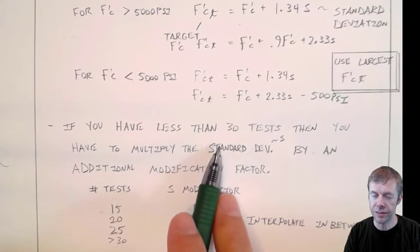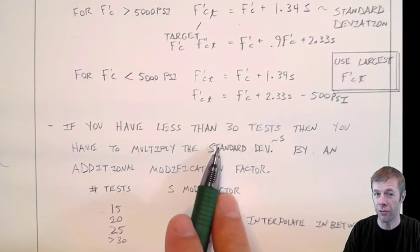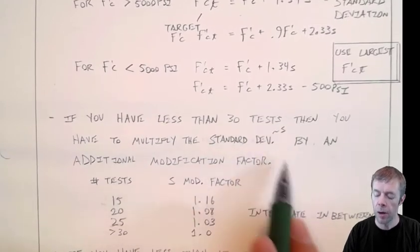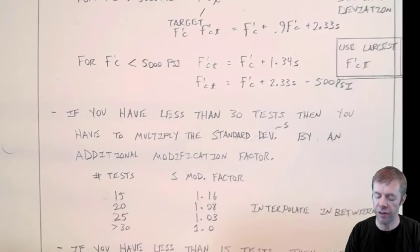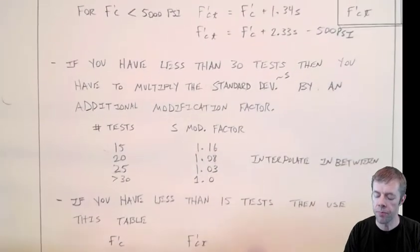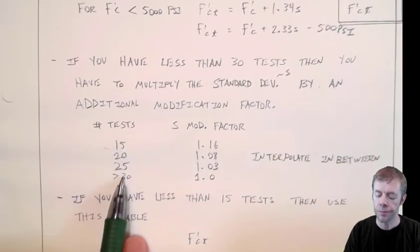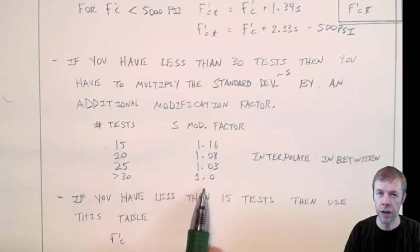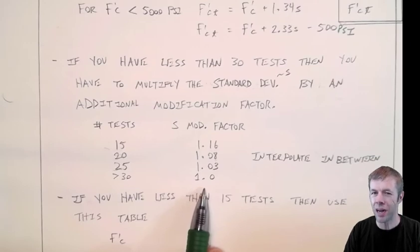If you have less than 30 tests, a lot of people don't have 30 tests so they fall into this category, then you have to multiply the standard deviation by an additional modification factor. This is a table. This is the number of tests you have, and this is the modification factor you have to multiply by your standard deviation. This is the idea that you might not have enough tests to really accurately determine your standard deviation.